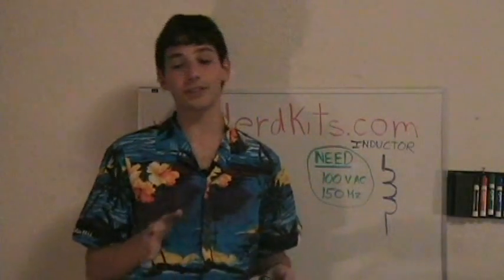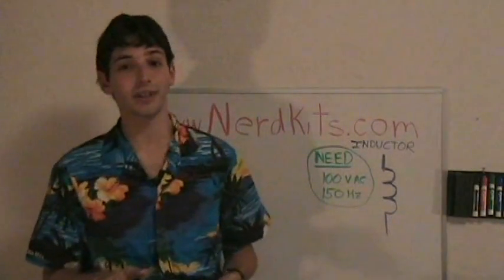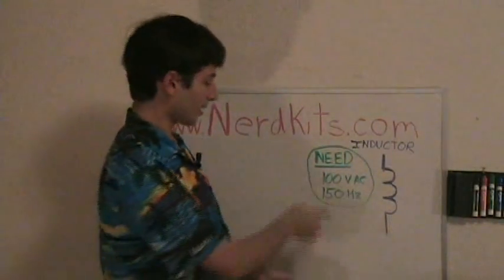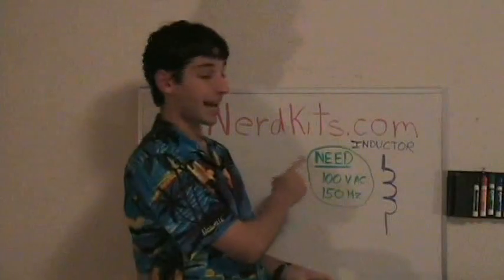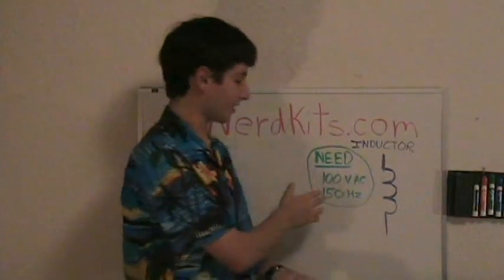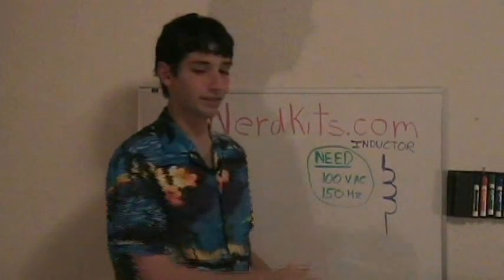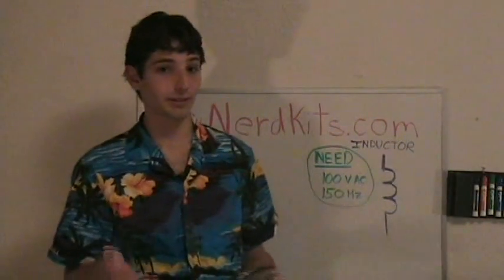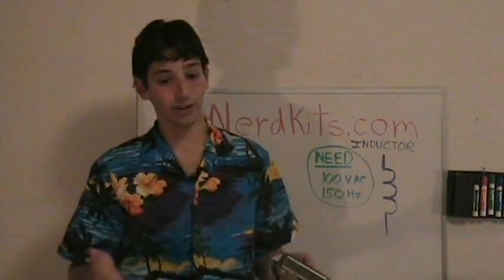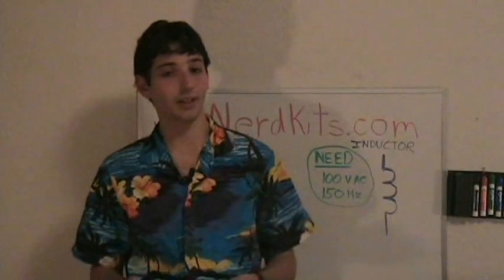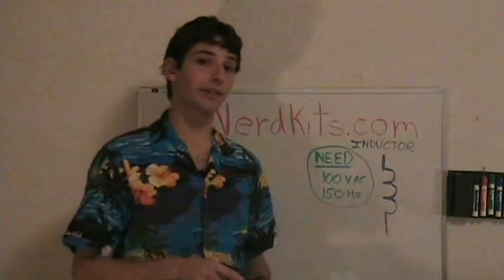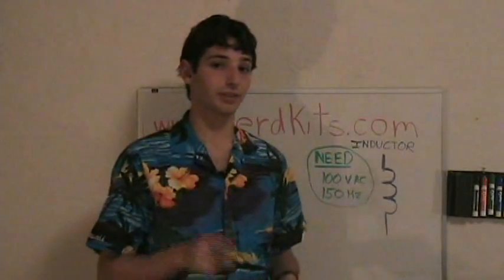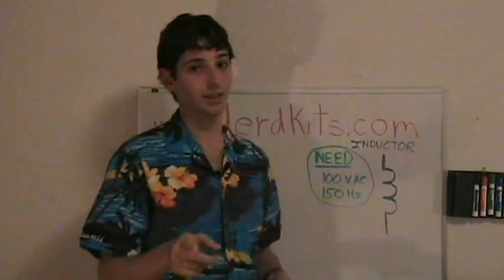Electroluminescent backlights are actually hard to drive, because they require about 100 volts AC at 150 Hertz. All we have on board is the 5 volts to power your microcontroller, but we can generate the high voltages using an inductor.